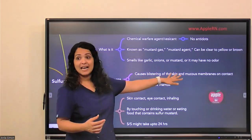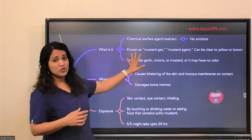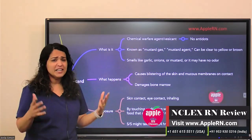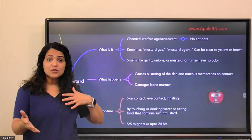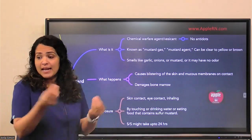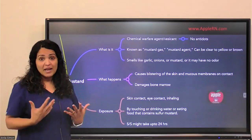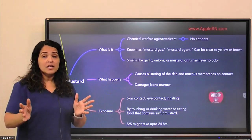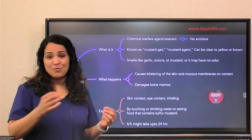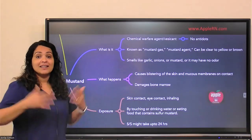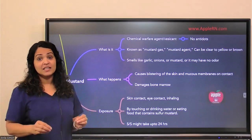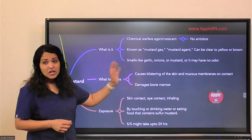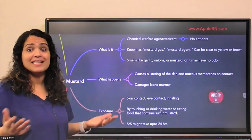Sulphur Mustard causes blistering of the skin and mucous membranes on contact. It is also known by other names: mustard gas, mustard agent. It can be clear, yellow, or brown, and can be in gas form or liquid form, and it can even be in food items. It smells like garlic, sometimes like onion or mustard, or it may be odorless — which makes it very difficult to identify.